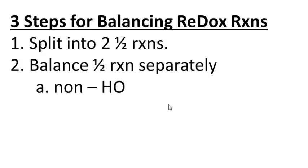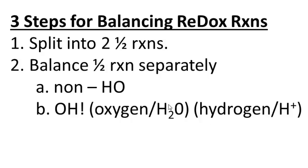After balancing the non-H/O elements, you balance the remaining elements in this order: oxygen first, then hydrogen. Oxygen is balanced by adding water molecules to the opposite side — whatever side has more oxygens, you add an equal number of water molecules to the other side. Then you balance hydrogen. Since the reaction occurs in acidic solution, you balance hydrogen by adding protons to the opposite side.